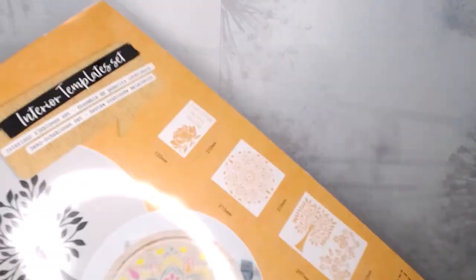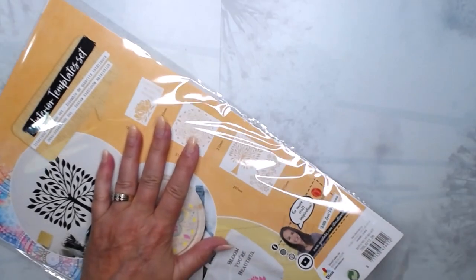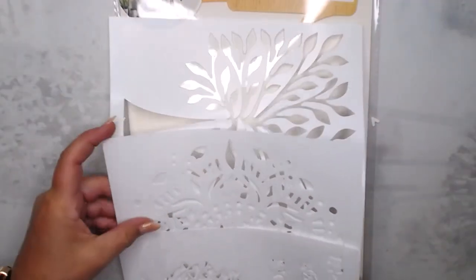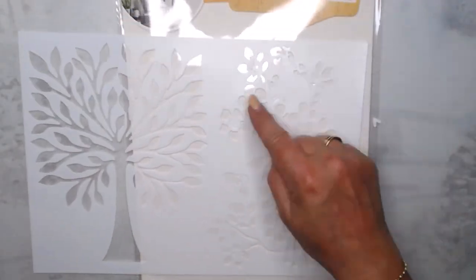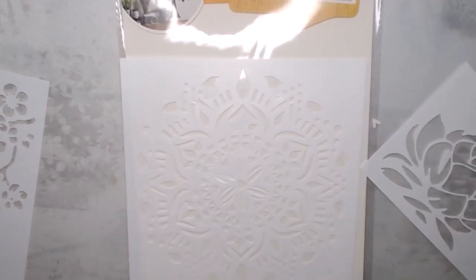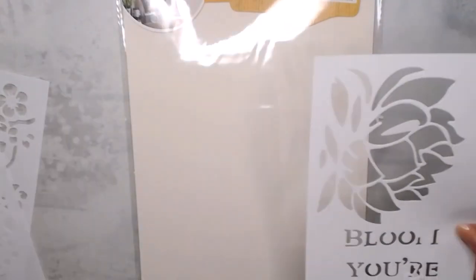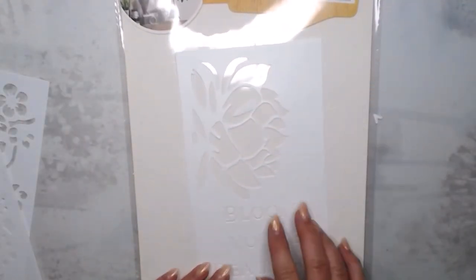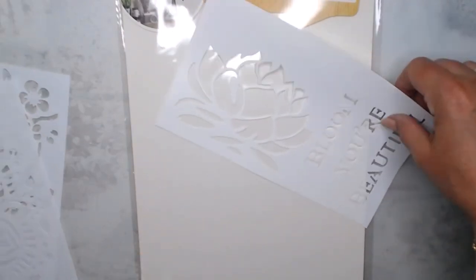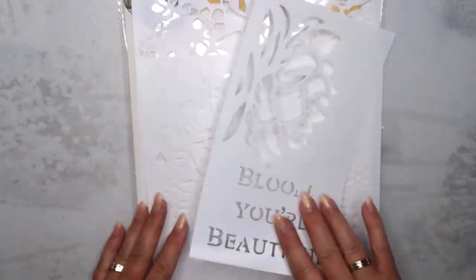And then the last one, I think it's more mandala or nature. This one has a tree and some flowers. A mandala, that's very nice. I can see that to use it as a background. And bloom, you're beautiful, with a kind of a water lily. It looks like a water lily to me. So yeah, happy with those, especially because they were so cheap. You can never have enough stencils.